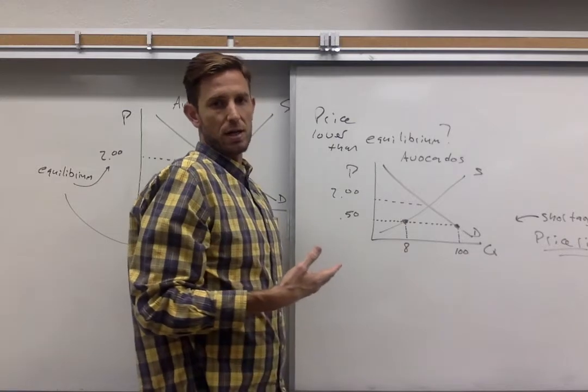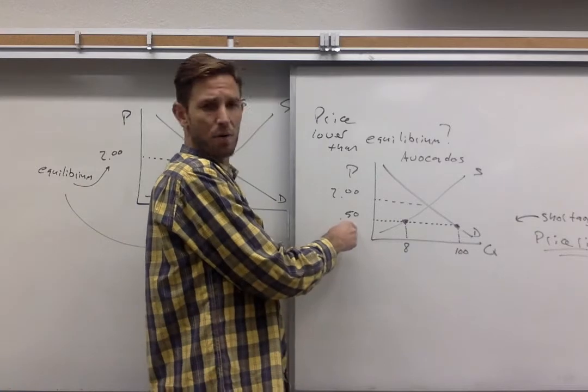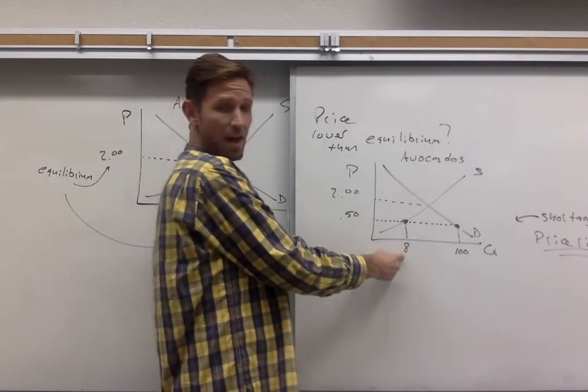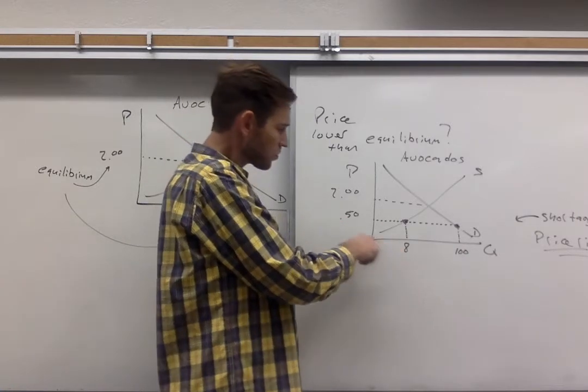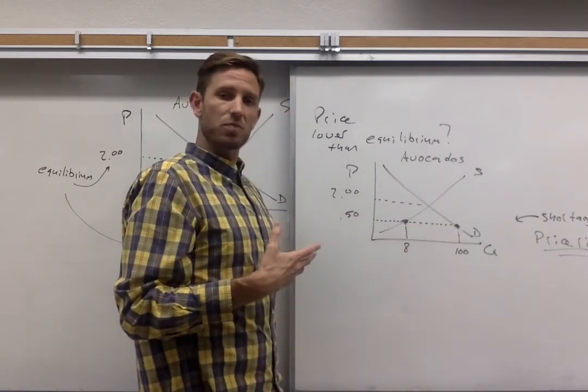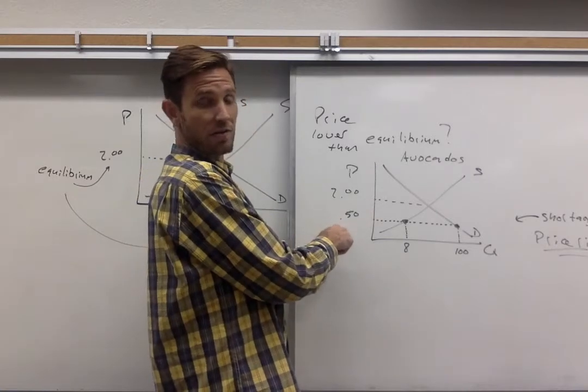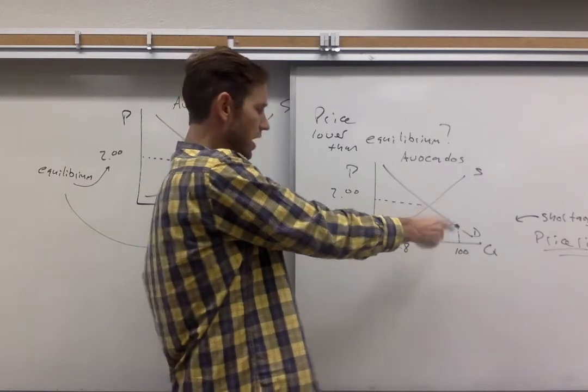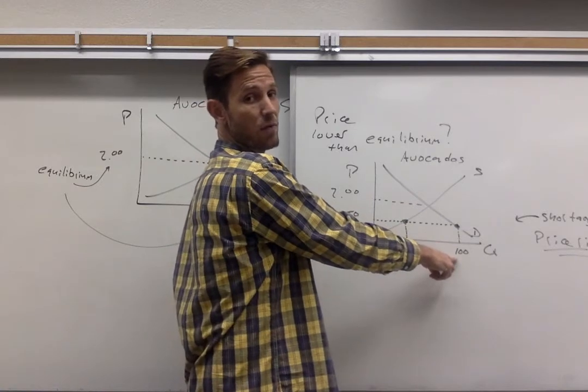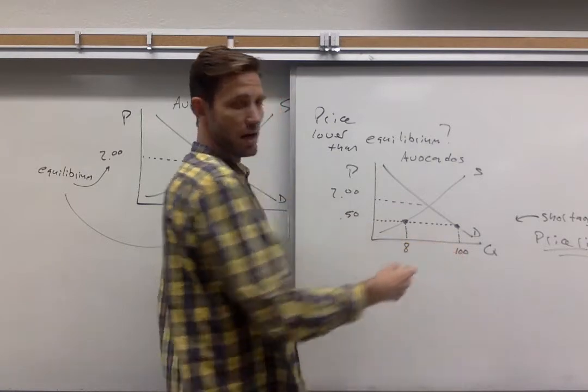And you should expect that to be a relatively low quantity because, of course, it's hard to make a profit if you're selling your good at a low price. So we see not much available for sale. When we read over to the demand curve, we're going to see that buyers respond in the opposite fashion. Of course, if you can get avocados for only 50 cents, buyers think that's wonderful and they want to buy lots more than they did before. So the quantity demanded at the price of 50 cents is a hundred avocados.